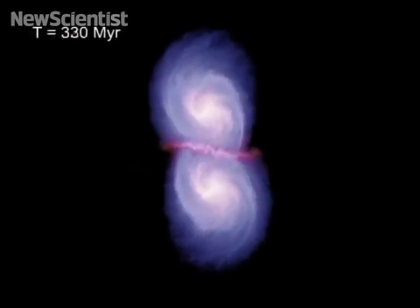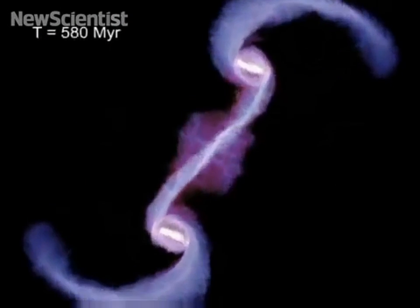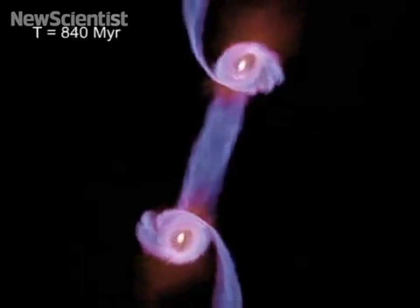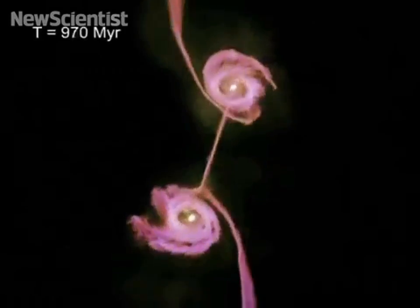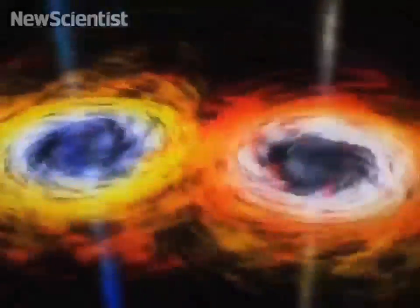But colliding galaxies could also be responsible. When they interact, violent tidal forces tear the galactic disks apart. Stars, gas and dark matter then coalesce to form a single galactic disk ready to collapse into a supermassive black hole.